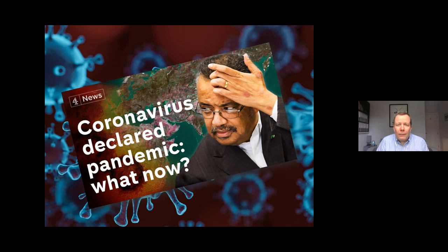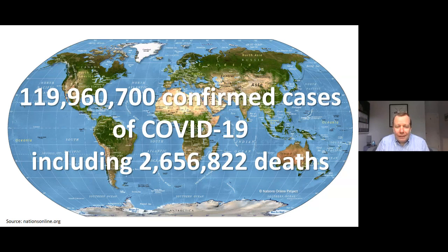This is Tedros, the Director General of the WHO — the former Ethiopian health minister. When the music stopped, he was in the most important seat in the world, leading the global public health response to this pathogen. It has now killed 2.6 million people and infected at least 120 million. There are swathes of sub-Saharan Africa where we don't know how many people have the disease or have died. We don't know what's happening in Russia. So this is an underestimate of the scale of the horror that this disease has caused.